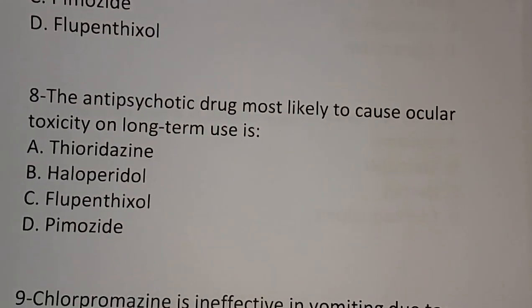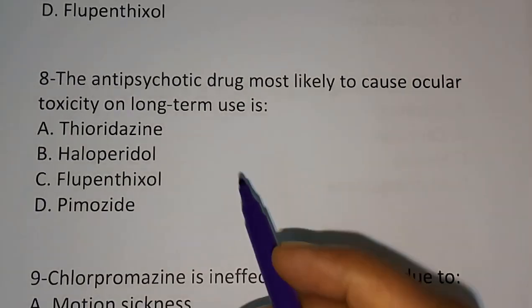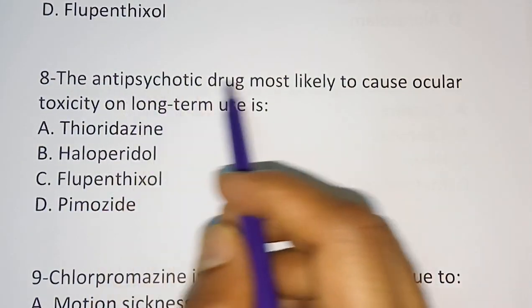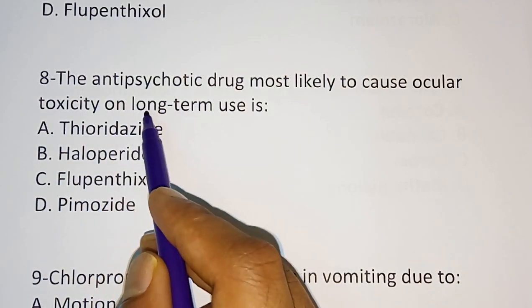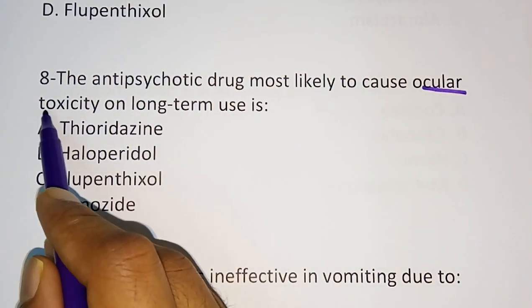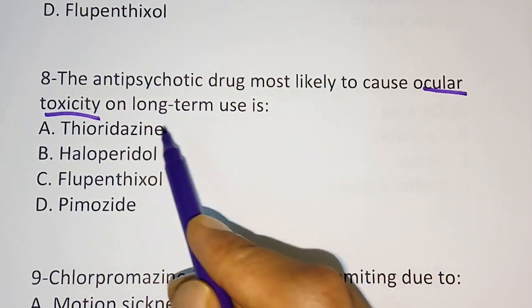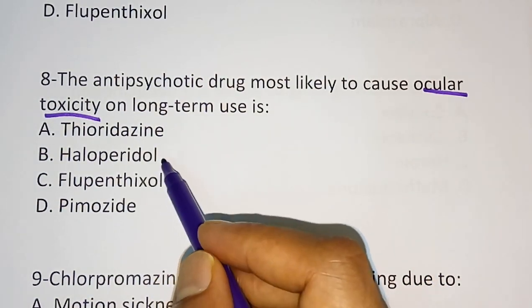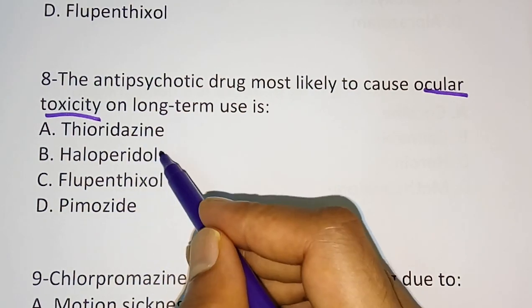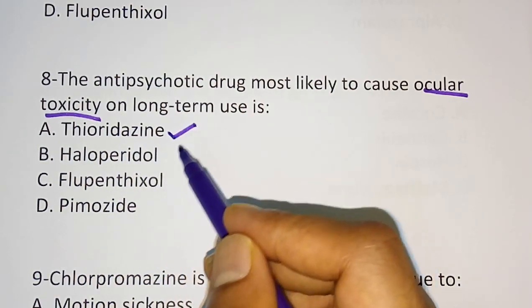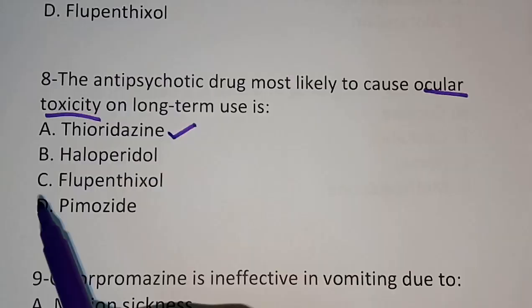Question 8: The antipsychotic drug most likely to cause ocular toxicity. The only antipsychotic drug which causes ocular toxicity on long-term use. Options are: thioridazine, haloperidol, flupentixol, pimozide. The correct answer is option A, thioridazine. Thioridazine will cause ocular toxicity when used long-term.